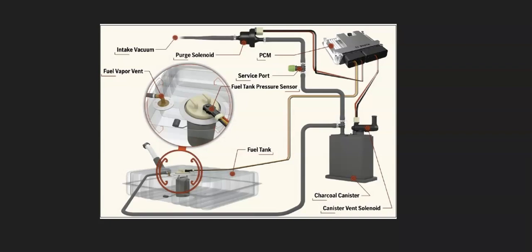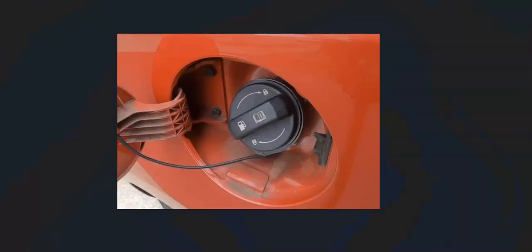The first thing to do when you get a P0496 code or any EVAP code really is go check the gas cap. The gas cap needs a seal or else it could cause issues. The whole EVAP system needs to be in a slight vacuum to work properly and the gas cap is a part of this.